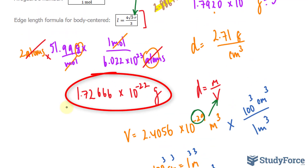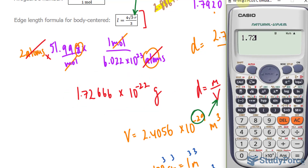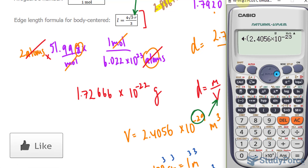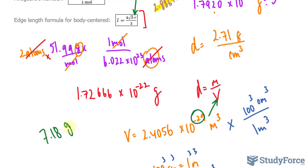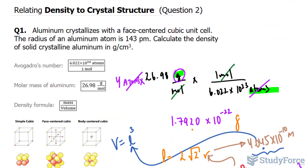Now we divide the mass by the volume. On the calculator: 1.72667×10⁻²² divided by 2.4056×10⁻²³. Rounding to three significant figures, we get a density of 7.18 grams per centimeter cubed. That is the density of chromium, and that is how to relate density to crystal structure.